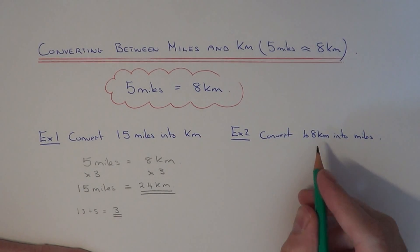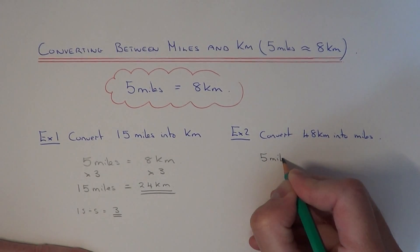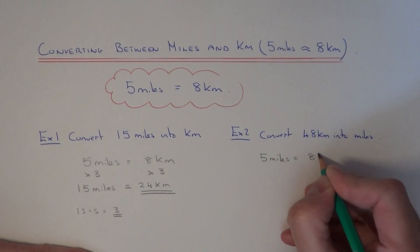Let's have a look at example two. This time we need to convert 48 kilometers into miles. Again, copy out the conversion above: 5 miles equals 8 kilometers.